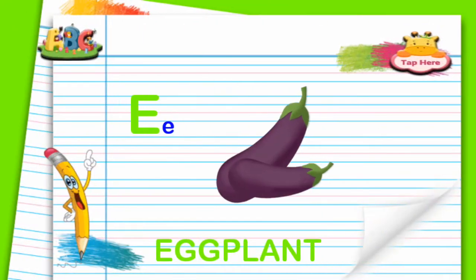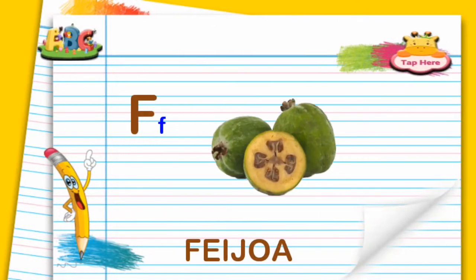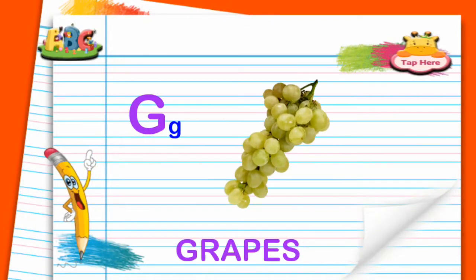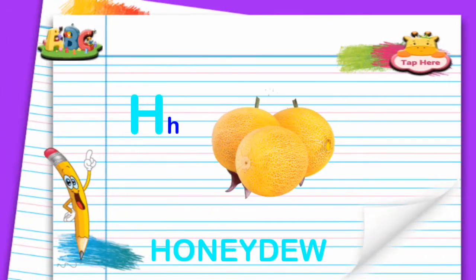E for Eggplant. F for Flora. G for Grapes. H for Honeydew.